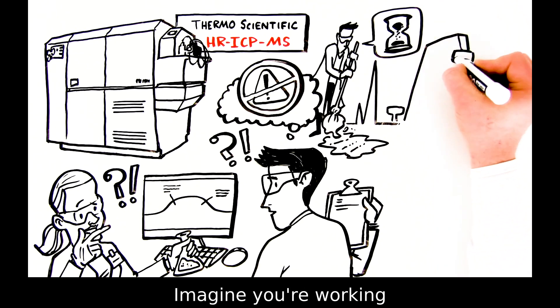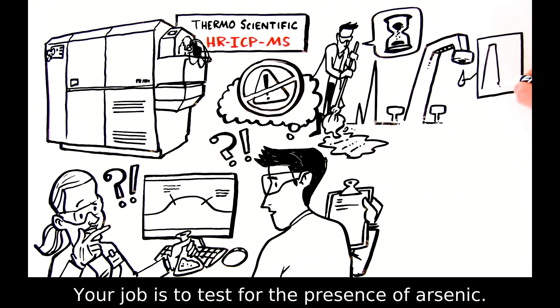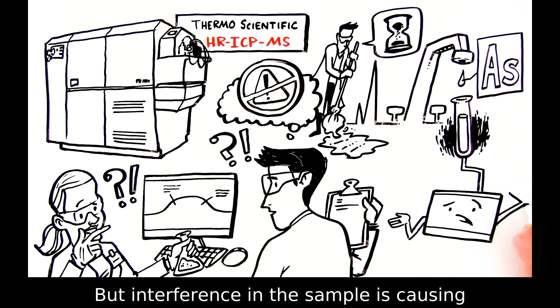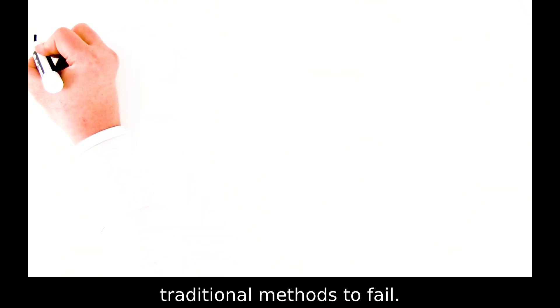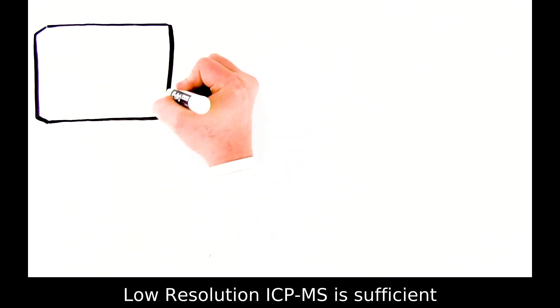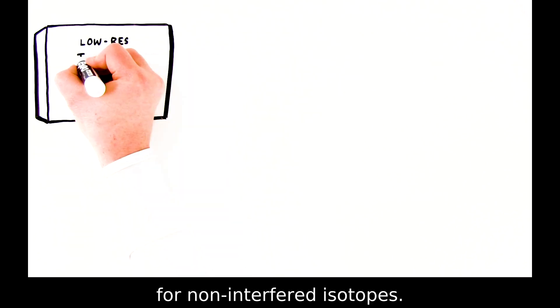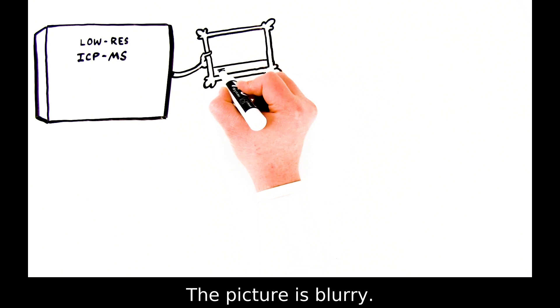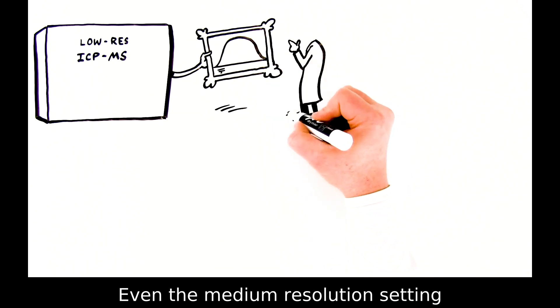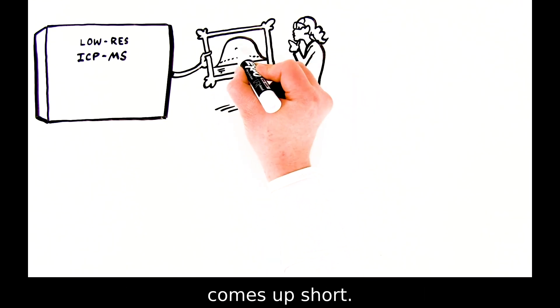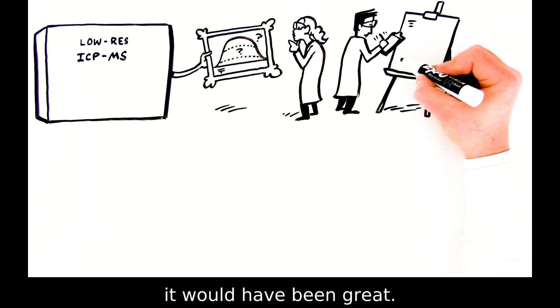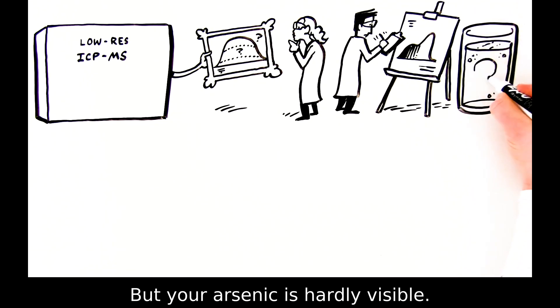Imagine you're working with a sample of drinking water. Your job is to test for the presence of arsenic, but interference in the sample is causing traditional methods to fail. Low-resolution ICP-MS is sufficient for non-interfered isotopes, but it's not selective enough for your arsenic. The picture is blurry. Even the medium-resolution setting comes up short. If your analyte of interest were a transient metal, it would have been great, but your arsenic is hardly visible.